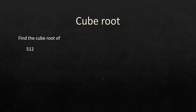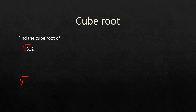Now let's find the cube root of 512. The cube root symbol is like the square root symbol but with a 3. Normally for square roots we don't write the 2, but for cube roots the 3 must be present. We will follow the same prime factorization procedure.